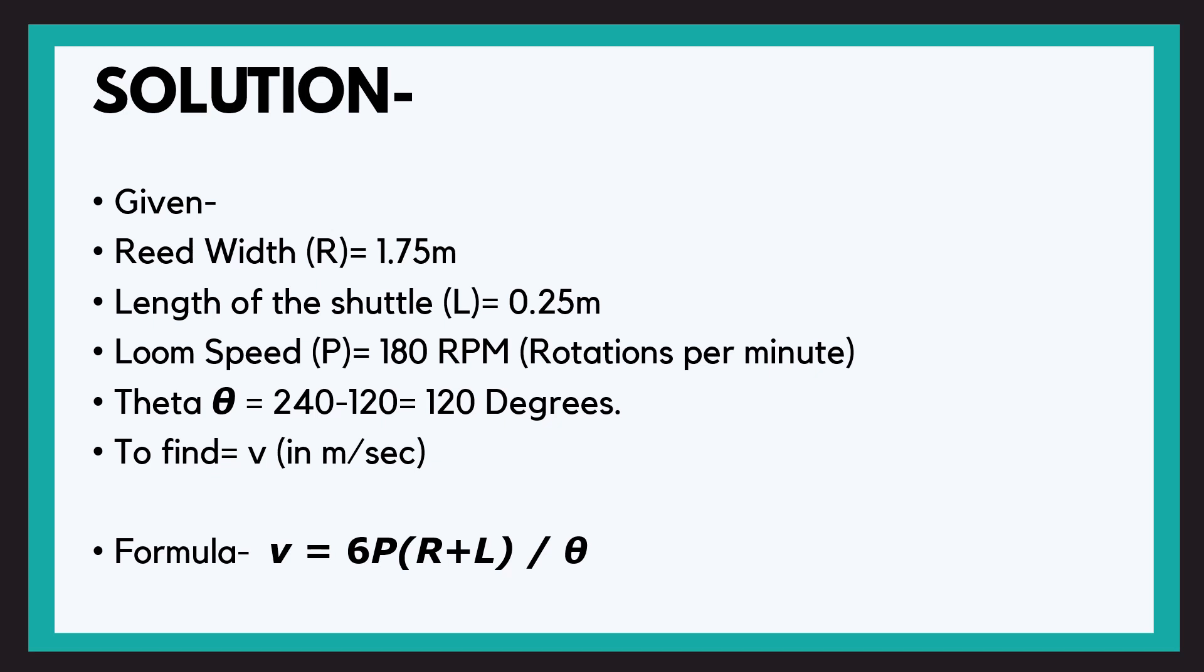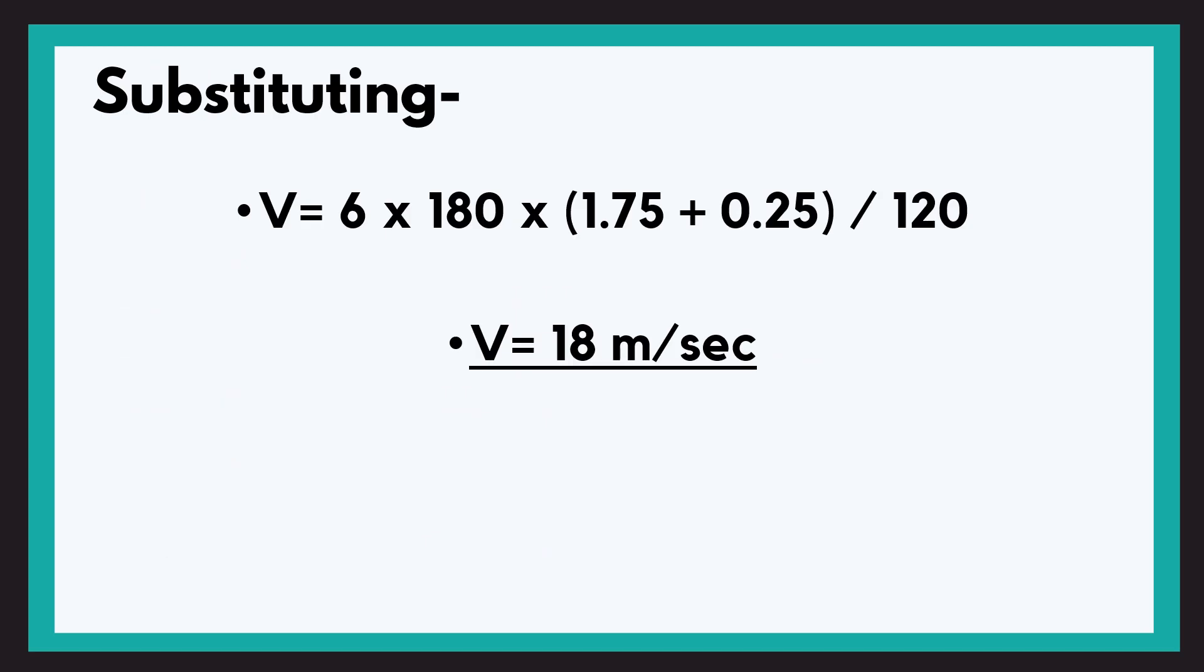So the formula is V equals 6P times R plus L upon theta. After we substitute the values, 6 into 180 into 1.75 plus 0.25 divided by theta, that is 120, we get velocity of the shuttle as 18 meters per second.